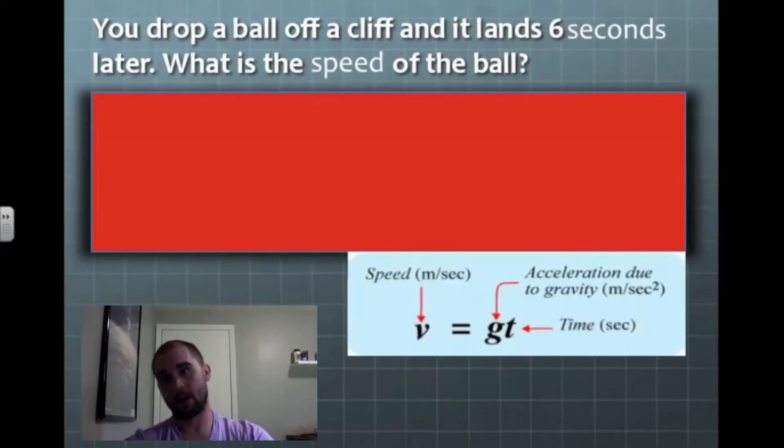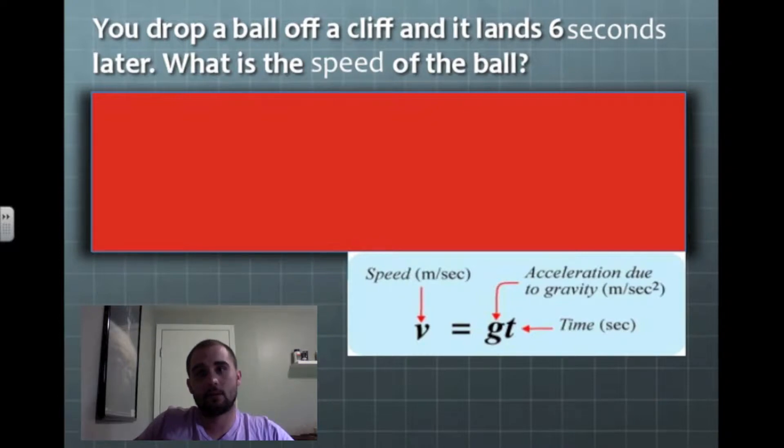Let's work one of these out. So, you drop a ball off a cliff, and it lands six seconds later. What is the speed of the ball? First thing we need to do is figure out what we're solving for. Since it says speed, what is the speed? We know speed's what we're solving for. So I'm going to be looking for that V.